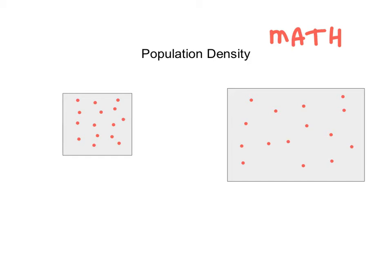Now before you freak out, it is really, really simple math. What are some things you're going to have to be able to do? You're going to have to be able to add — you can do that. You're going to have to be able to subtract, divide, and you might have to multiply. So it's no complicated algebra or calculus or trigonometry. It's just basic math.